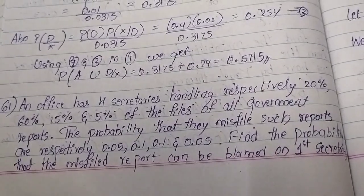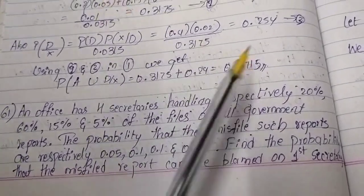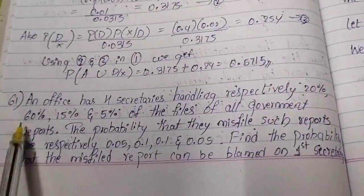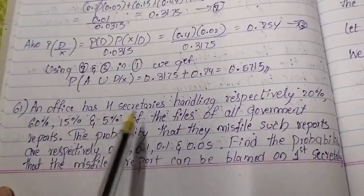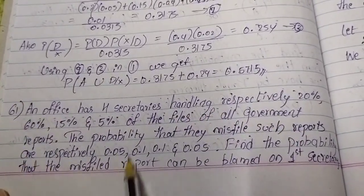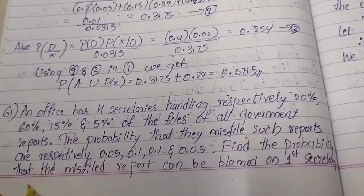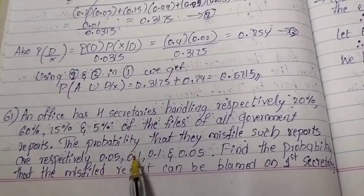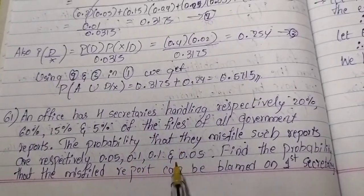First question: An office has four secretaries handling respectively 20%, 60%, 50% and 5% of the files of all government reports. The probability that they misfiled such reports are respectively 0.05, 0.1, 0.1 and 0.05.